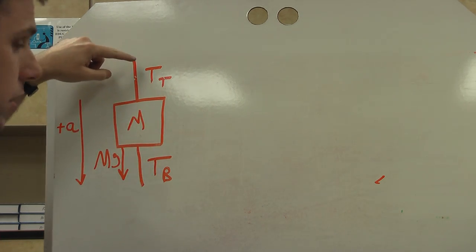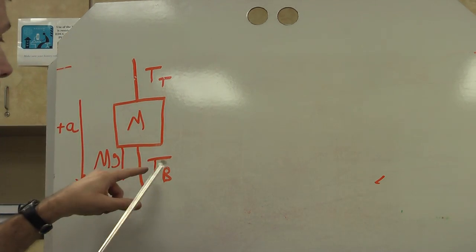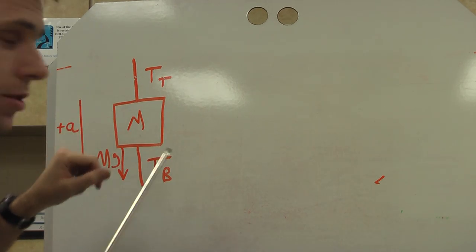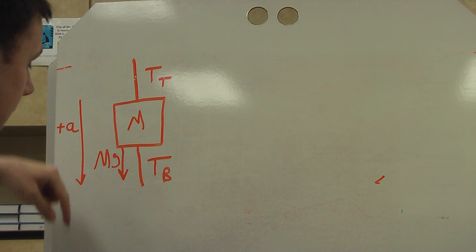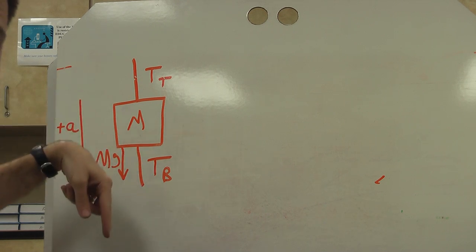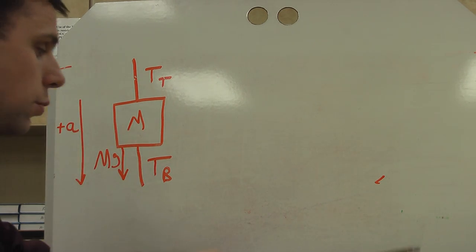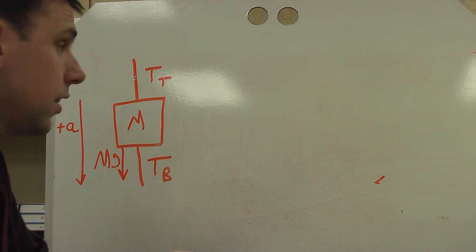In this case, we have the top tension, we have the bottom tension, so the top string, the bottom string, and then we also have the weight force. Now because I'm trying to pull it down, I'm going to say that that is the positive direction. So what I want to do is I want to write Newton's second law.